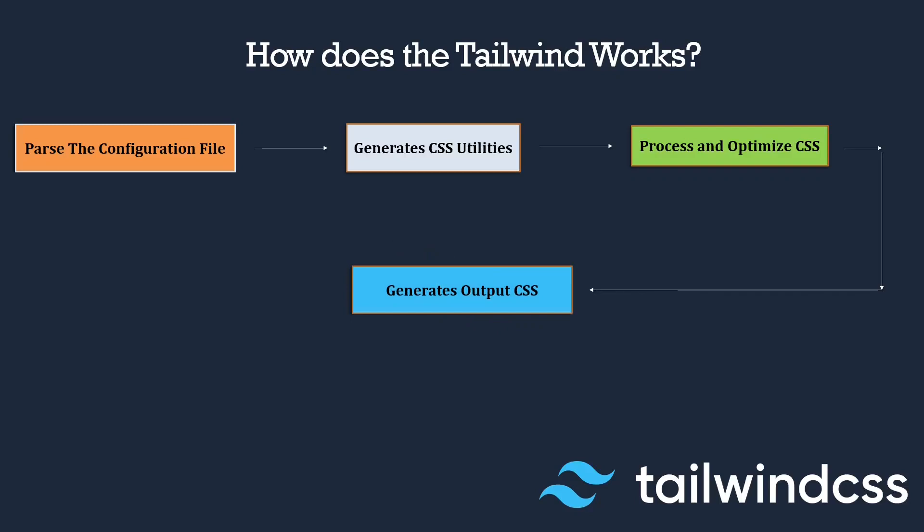After parsing the configuration, generating the CSS utilities, optimizing and processing the CSS file, Tailwind finally generates the output CSS code. It produces a minified CSS file that you can include in your HTML markup or your final bundle package. That file contains all the necessary styles for your website, and you can use the utility classes provided by Tailwind to style your HTML elements or JSX tags.